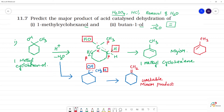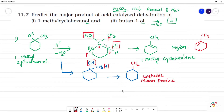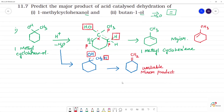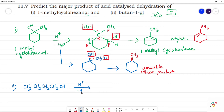Next, we have butan-1-ol. Butan-1-ol means CH3–CH2–CH2–CH2OH. This undergoes acid-catalyzed dehydration with H⁺, removing H2O.